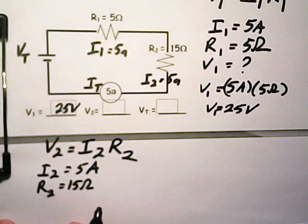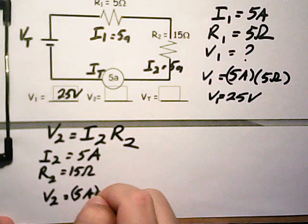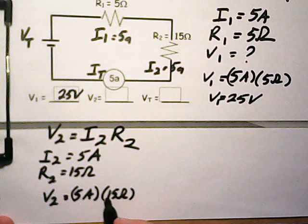So we're going to solve. V2 is equal to I2, which is five amps, times 15 ohms.